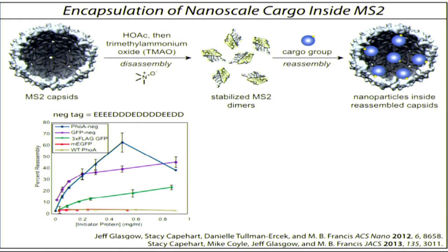We can put proteins on the inside of our capsid carriers if we express proteins with these highly negatively charged tags. This string of D's and E's — aspartate and glutamate — are two amino acids that have negative charges. When we put this on there, we get assembly of our capsids with the proteins trapped inside, about four to six copies. This was a major step forward for us.